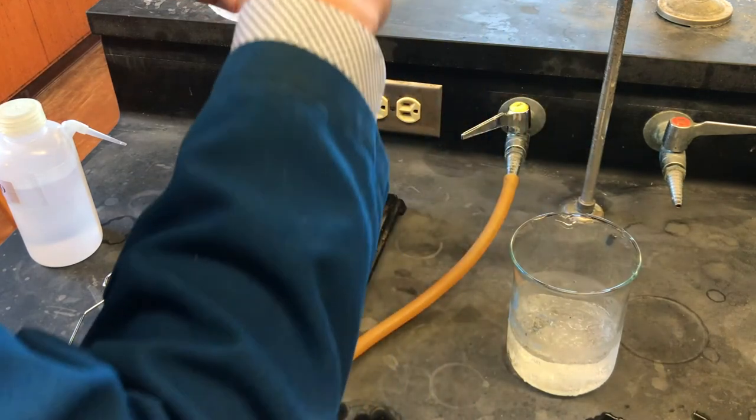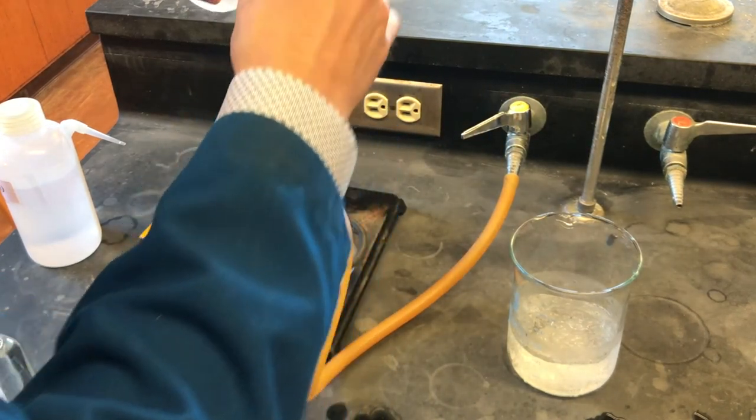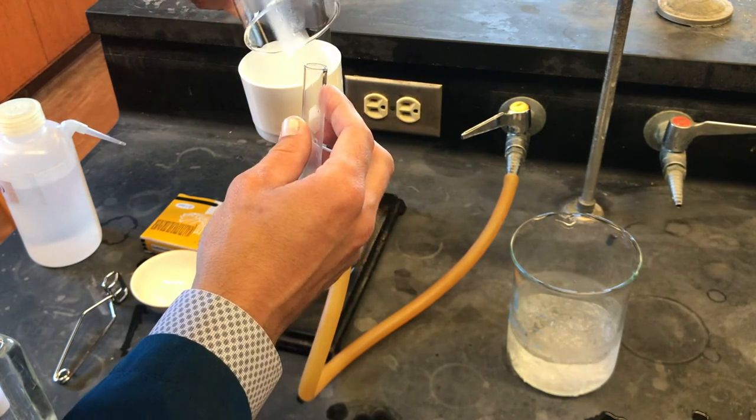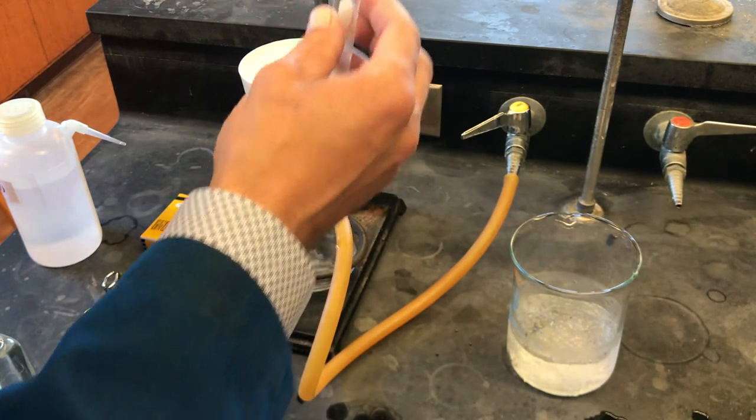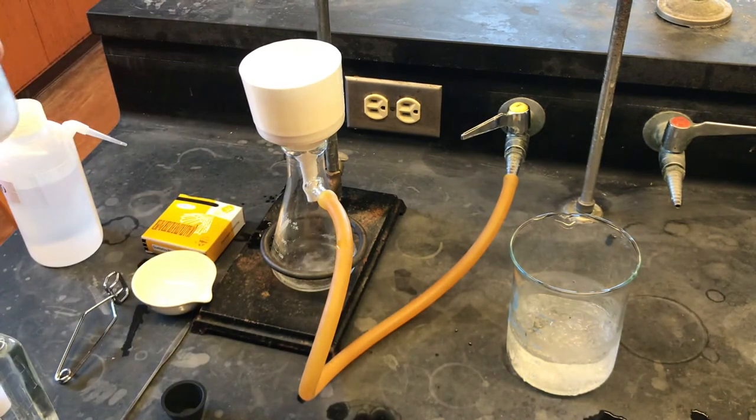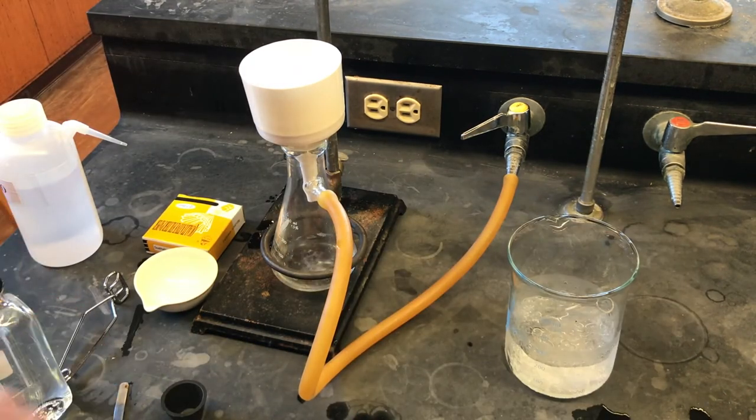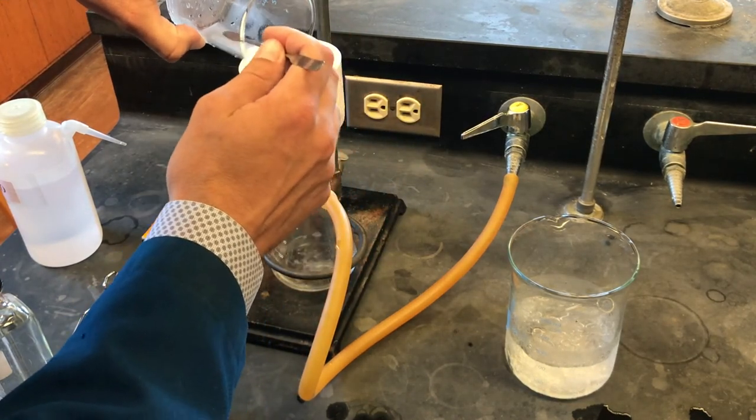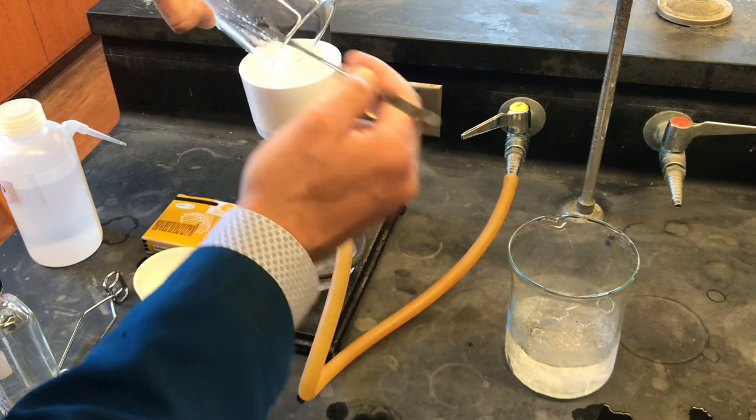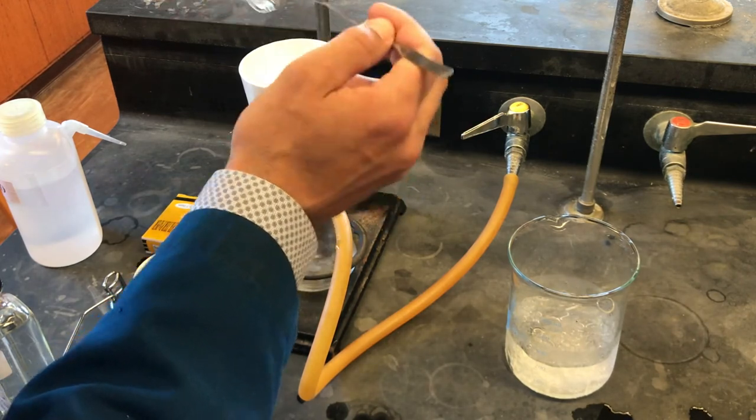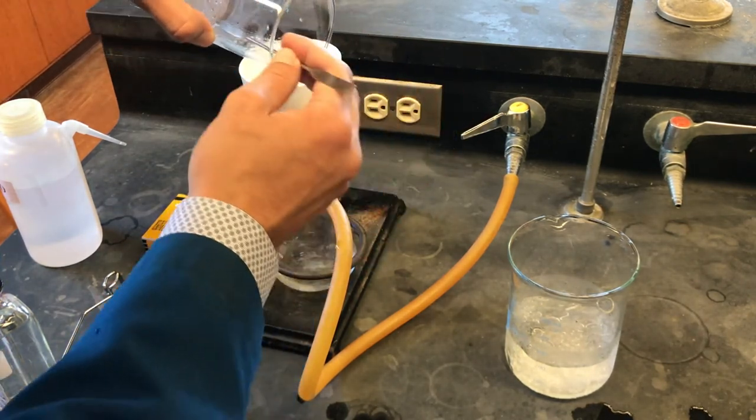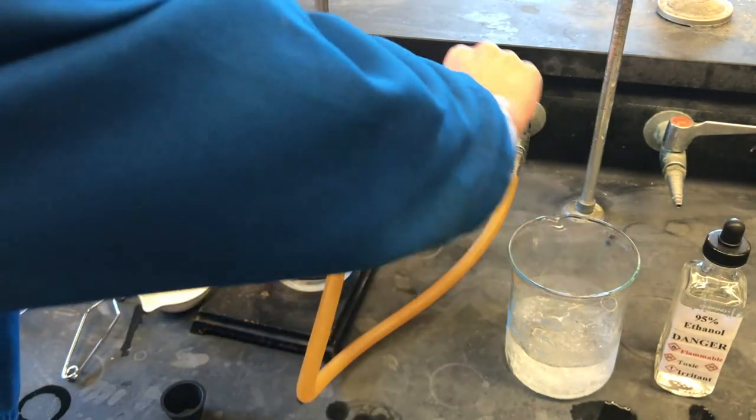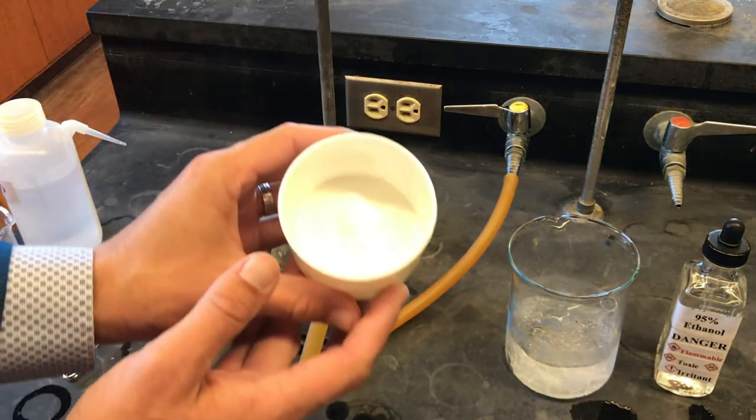We will use cold 95% ethanol to rinse our reaction beaker and retrieve the remainder of the potassium alum. Potassium alum has low solubility in ethanol, especially at low temperatures, which reduces the chance of it going back into solution and passing through the filter paper. We may also manually scrape the remainder of the crystals onto our filter paper. Any material remaining in our beaker will reduce our yield that we calculate at the end of the experiment.